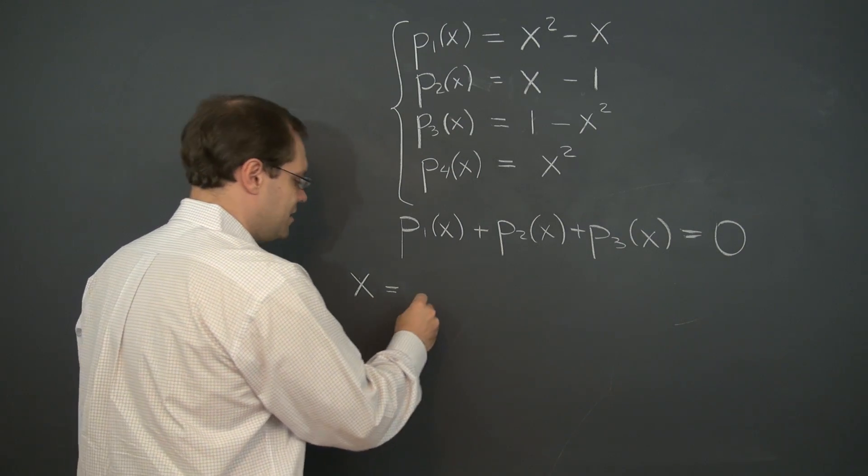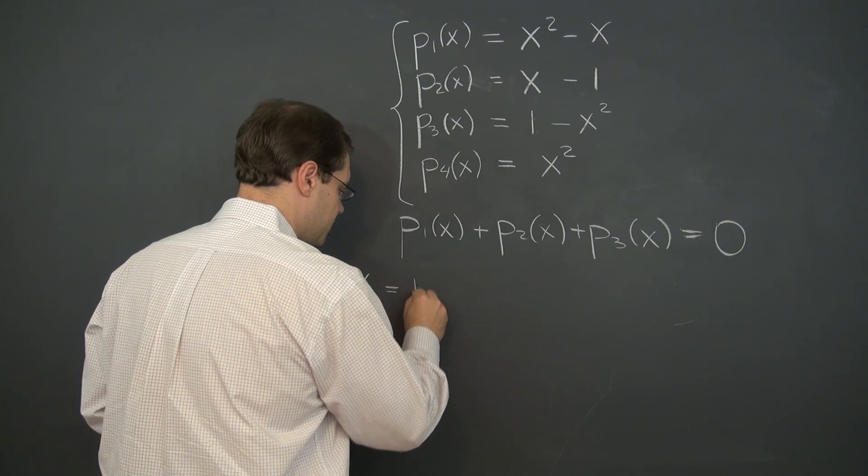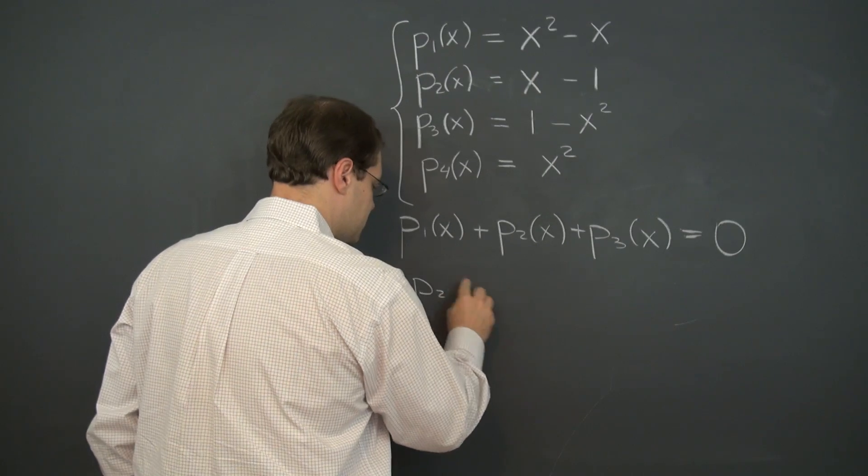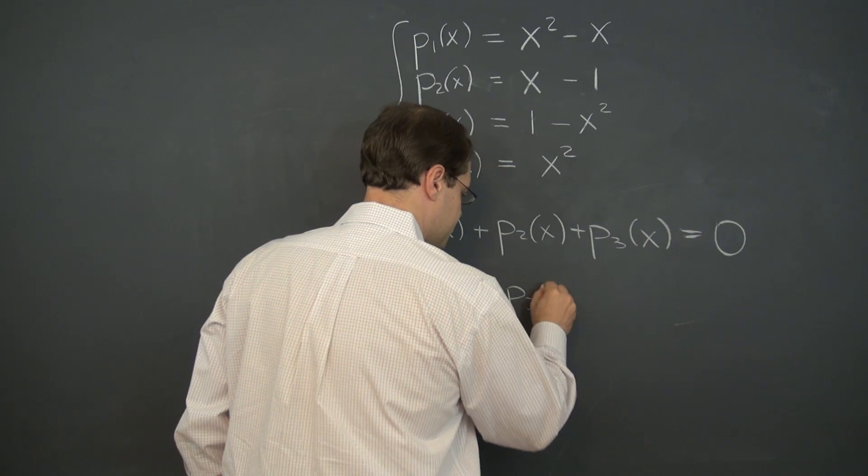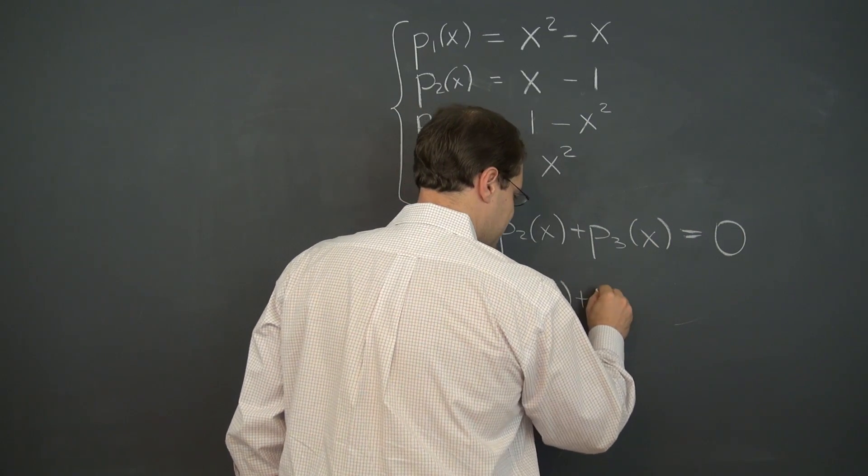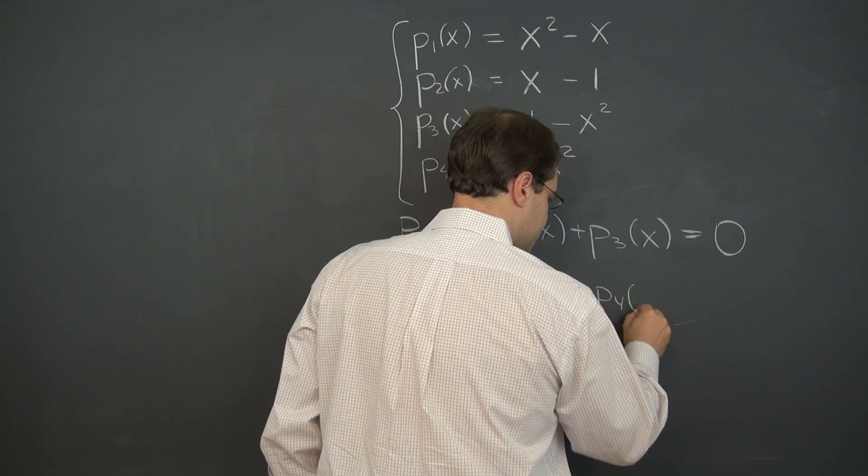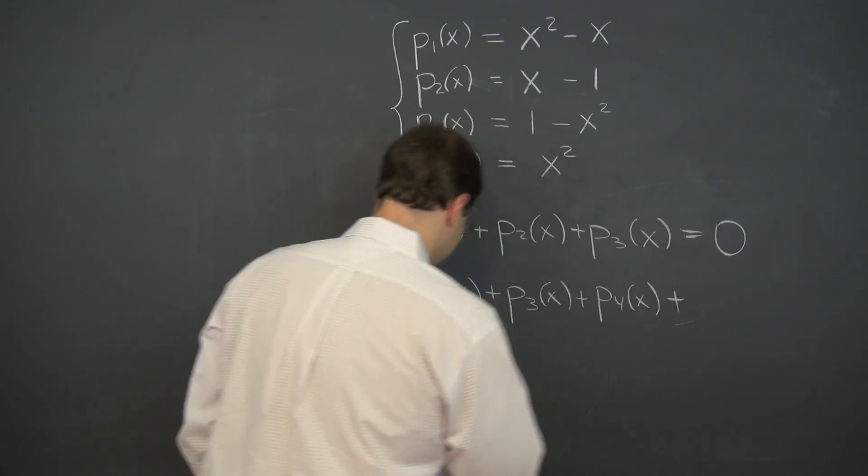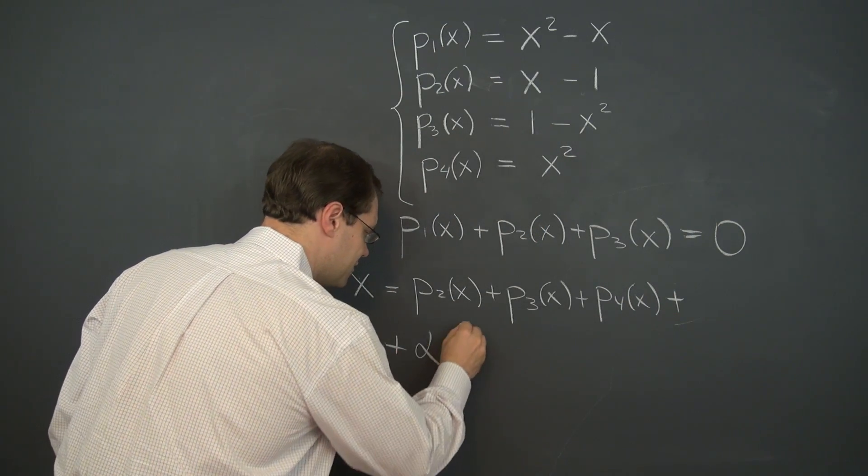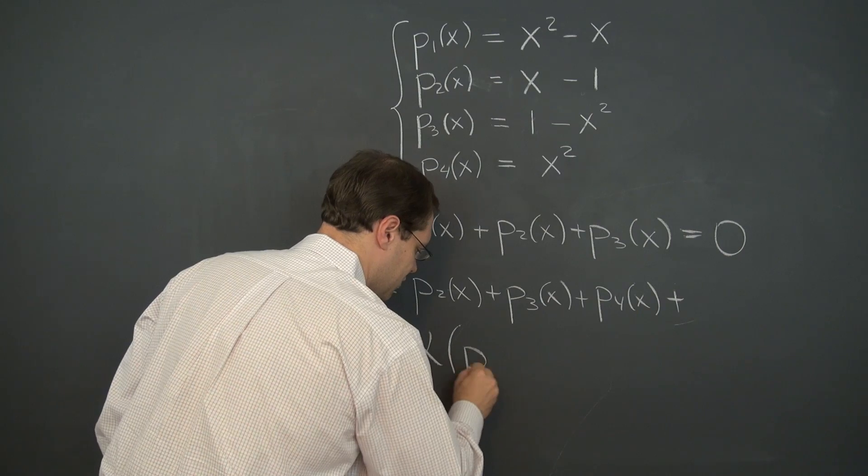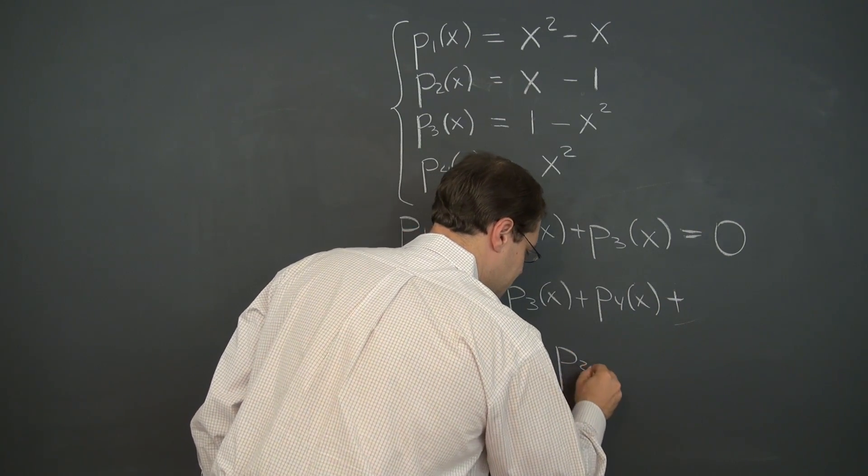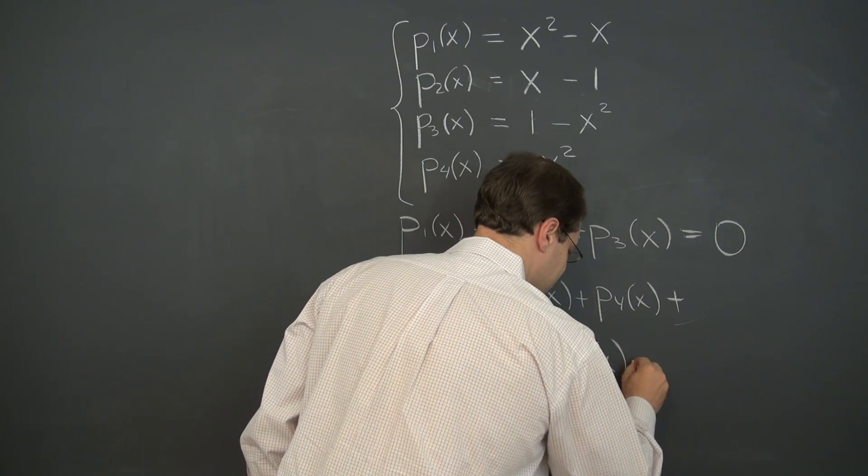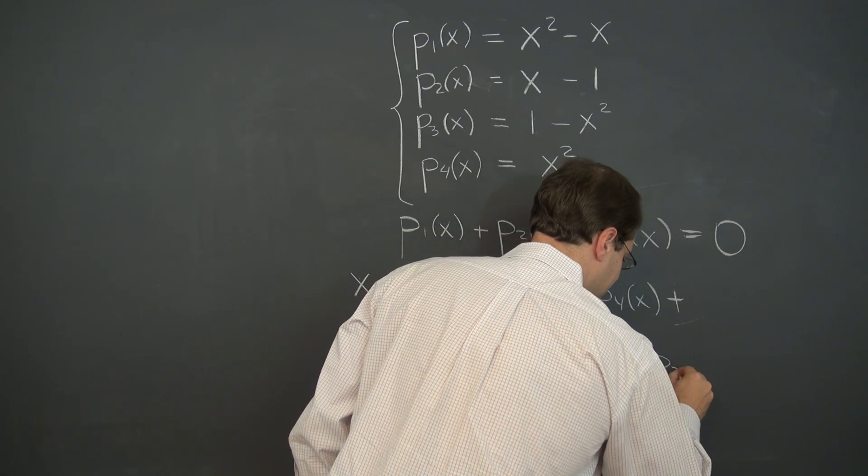Okay, so x equals p2 plus p3 plus p4 plus alpha times the fancy zero, p1 of x plus p2 of x plus p3 of x.